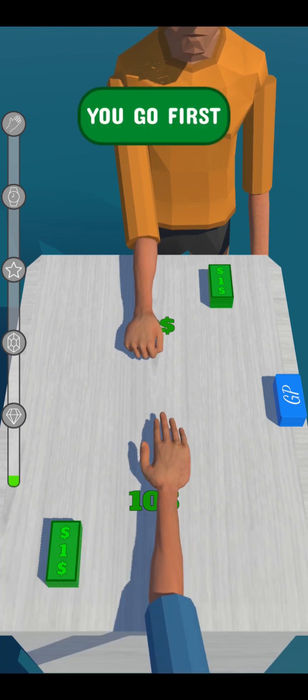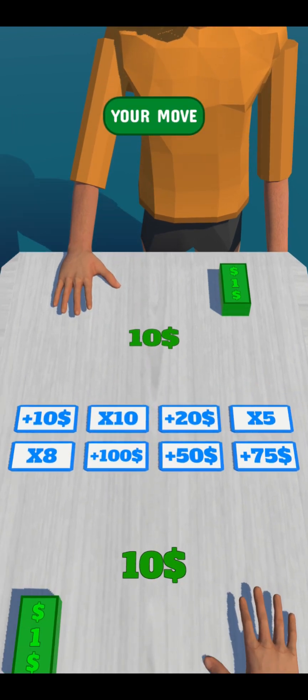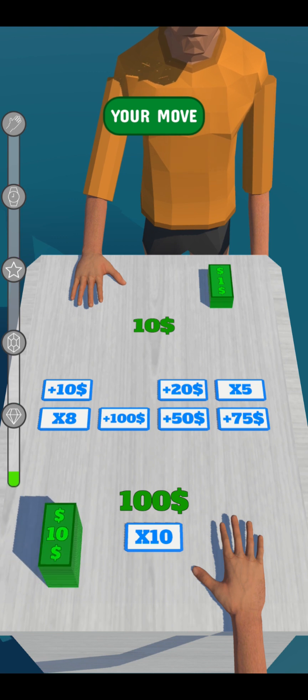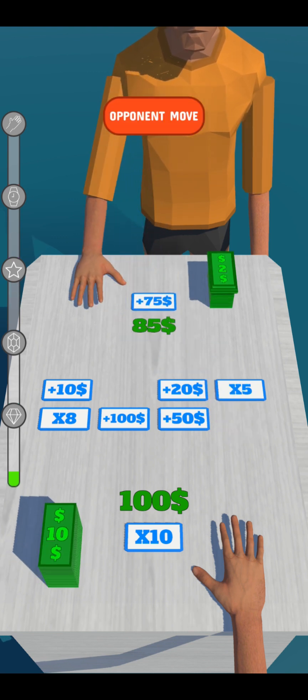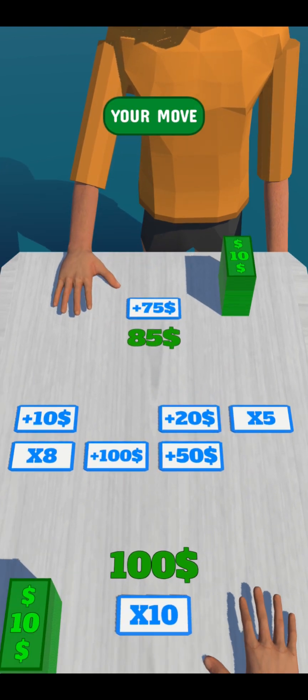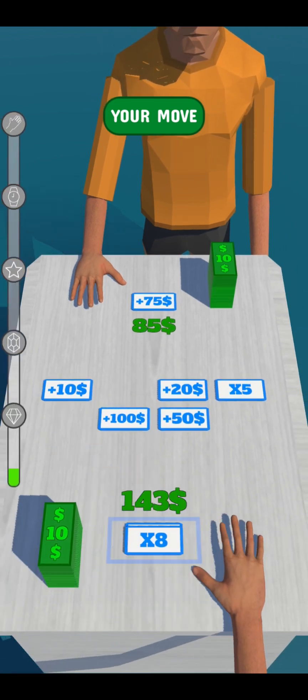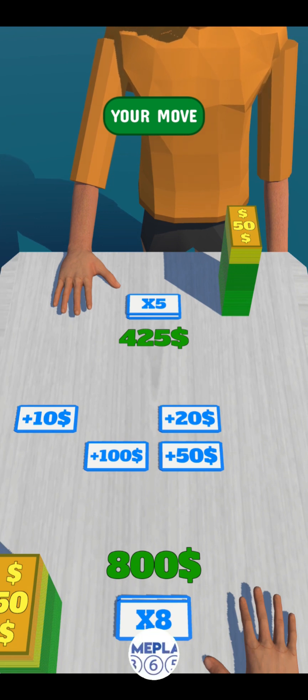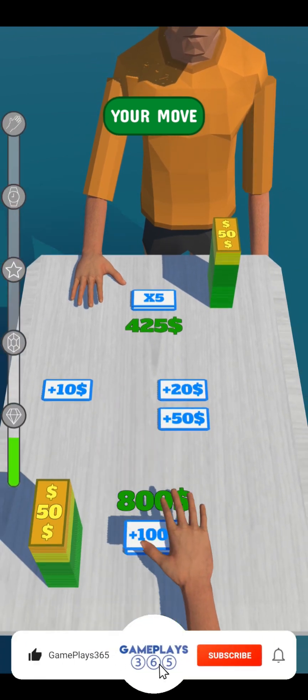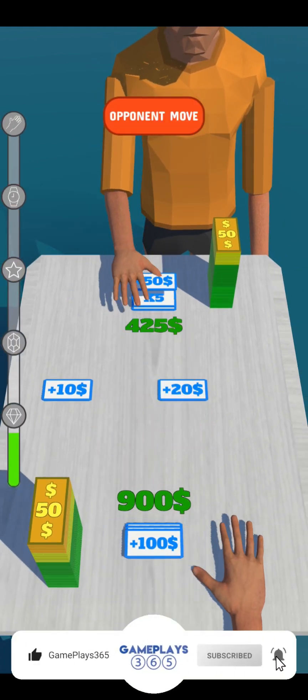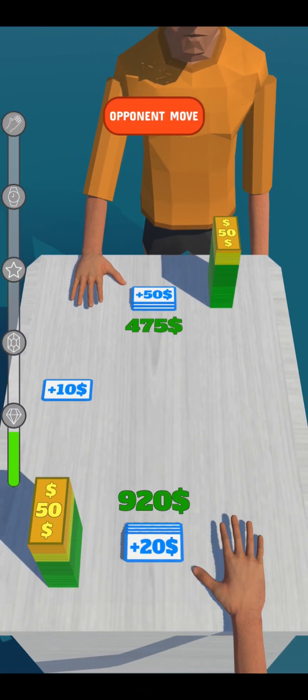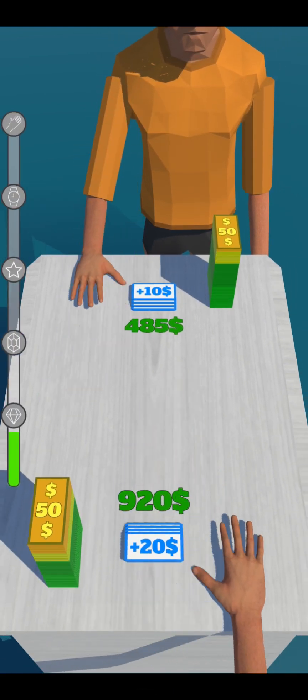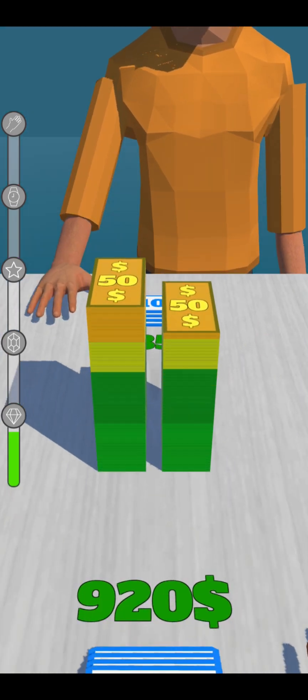So we start by playing that paper scissors game to see who is starting. And we select each card to modify the value of the sum of money, which is on the left, on our left hand. Nothing really tricky here. It's just basic math.